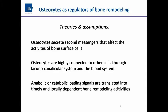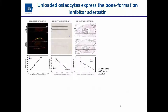From studies of unloading or non-loaded bones, sclerostin — one of the inhibitors of the Wnt signaling pathway — is expressed by unloaded osteocytes. Sclerostin acts upon osteoblasts to inhibit bone formation. Work from Robling and co-workers comparing non-loaded versus loaded bone showed that non-loaded bone had higher expression of sclerostin mRNA and also at the protein level.